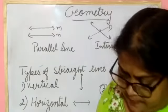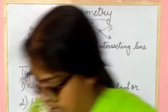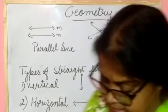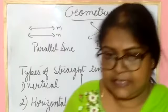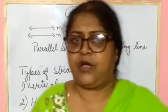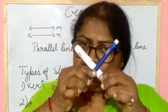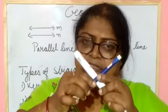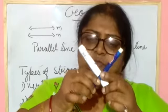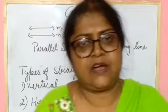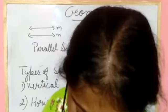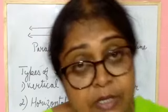Next one is the intersecting line. Drawing line AB and line CD — these two lines are cutting each other at point O, intersecting each other at point O. So this line is known as an intersecting line.